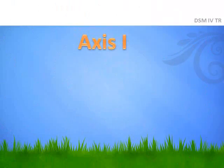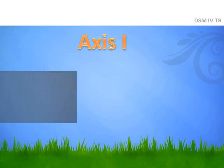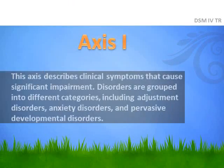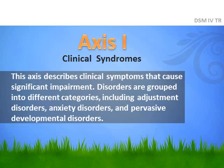Axis 1 describes the clinical symptoms that cause significant impairment. Disorders are grouped into different categories, including adjustment disorders, anxiety disorders, and pervasive developmental disorders.